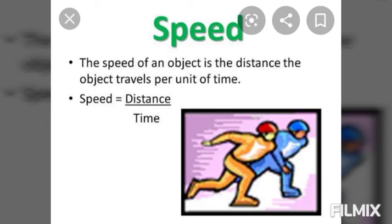कोई body कितना distance travel करती है per unit time में, वो उस body की speed होती है. अब हम इसे एक सिम्पल से example से समझते हैं.